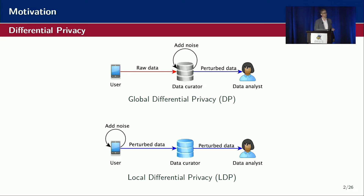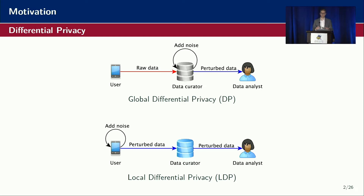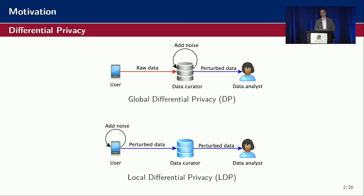In the global model, the noise is added globally — you can imagine a company's server. Whereas in the local model, the data gets perturbed locally on the user's device. Only perturbed data leaves the device, so raw data never leaves the device in the local model, which means it is more privacy preserving.